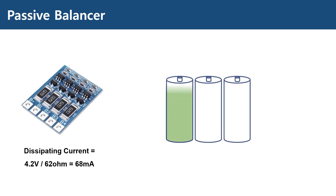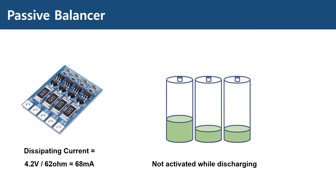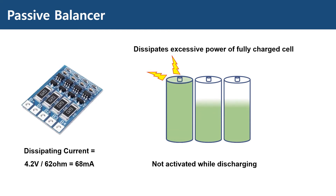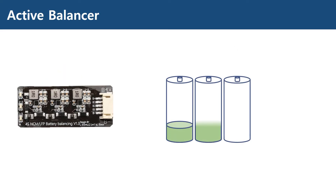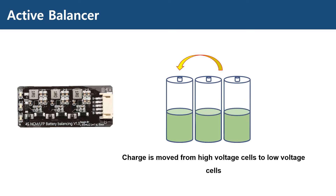Let's take a look at the animation for better understanding. As mentioned before, the passive balancer is not activated while discharging. When charging, however, the balancer is activated when a certain cell is fully charged and dissipates that fully charged cell until the other cells are fully charged. The active balancer is activated whenever the voltage between the cells are different, and charge is moved from high voltage cells to low voltage cells.